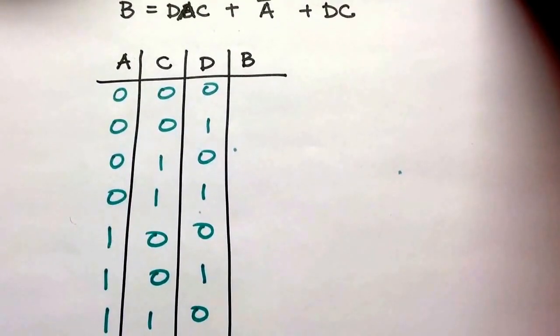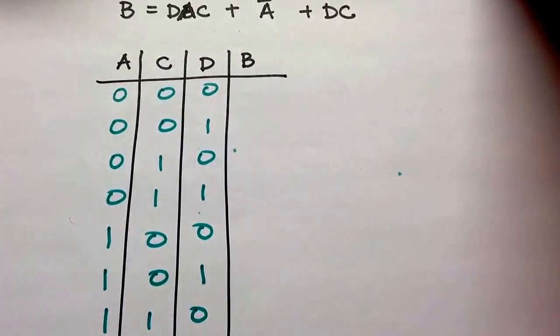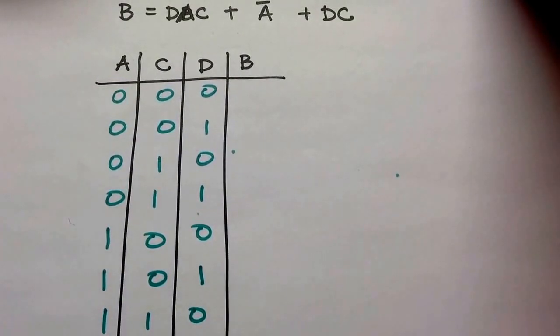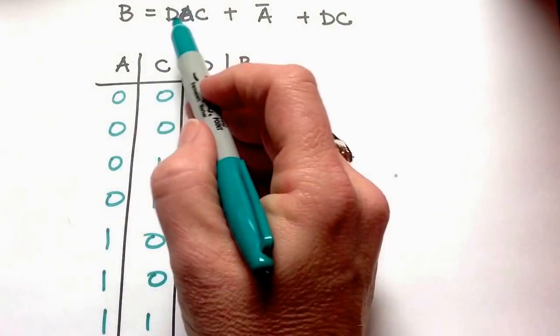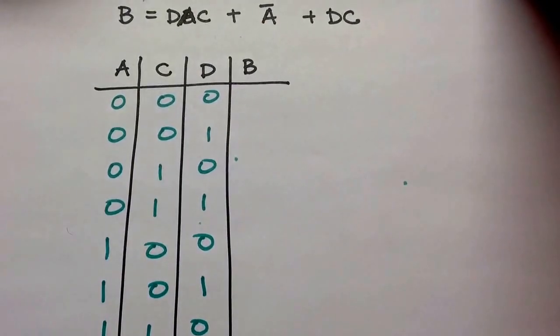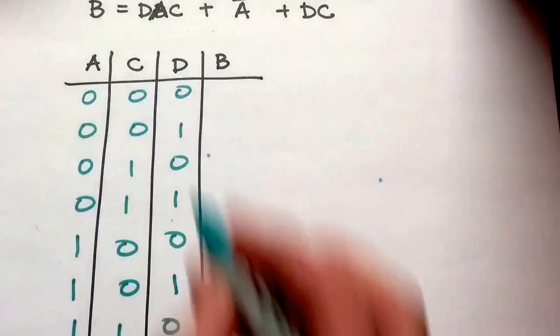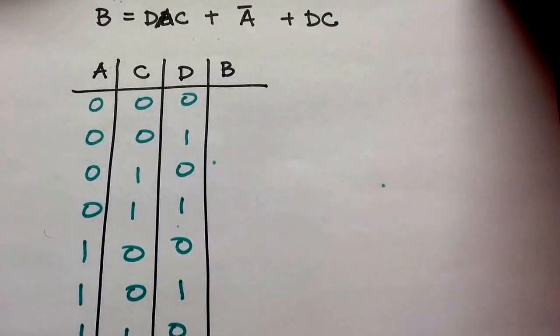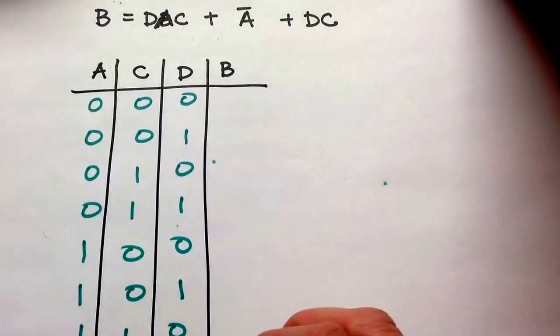That's just a tiny bit off screen, so now I need to find where D, A, and C are going to all be 1s. So that's actually at the bottom, A, C, D are all 1. I put a 1 there.